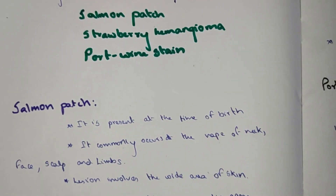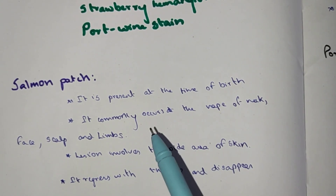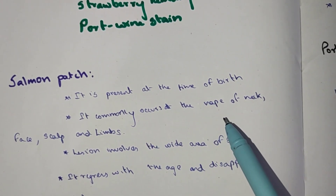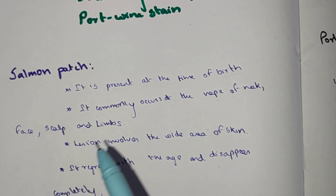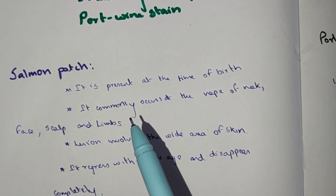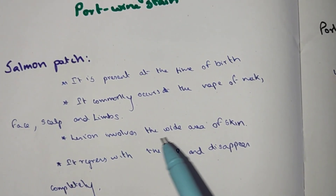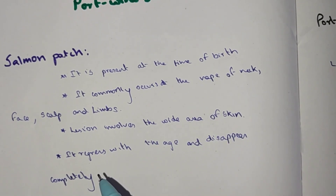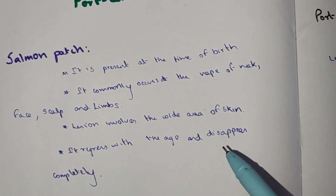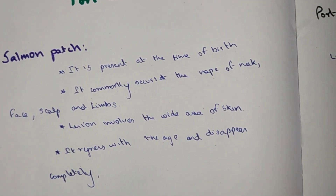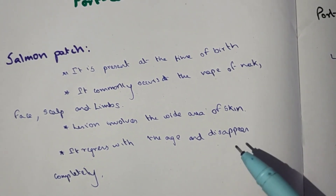The salmon patch is present at the time of birth and commonly occurs in the nape of the neck, back side of the neck, face, scalp, and limbs. This type of capillary hemangioma lesion involves a wide range of skin and it regresses, disappearing completely after some years of age.